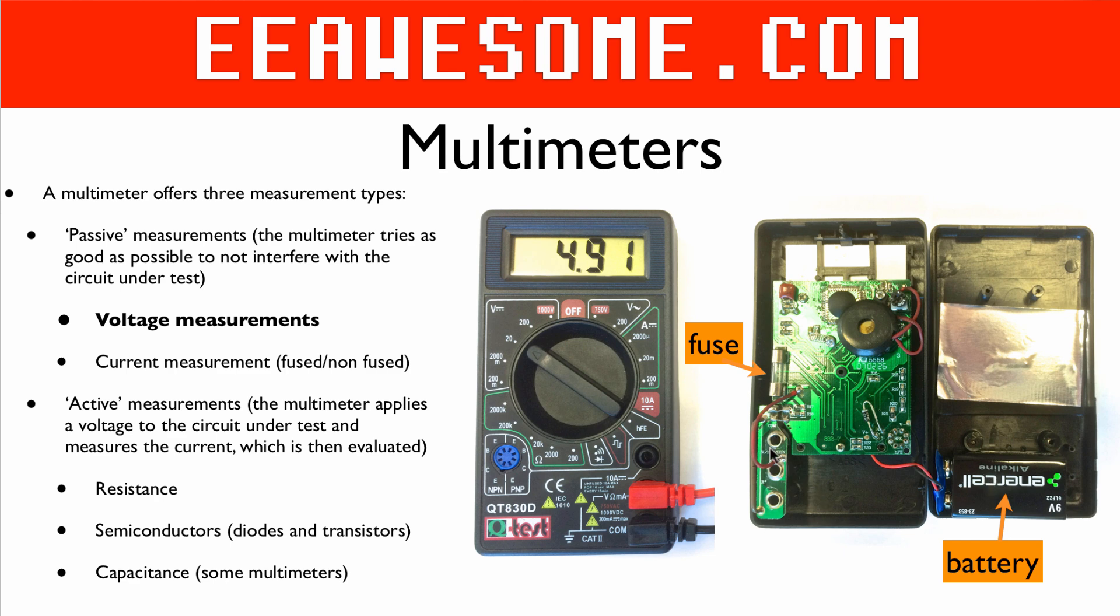These here are the three connectors. We have here the COM connector. This is usually connected to the system ground during voltage measurements and then we have the actual measurement probe which is labeled voltage, resistance or milliamps. So this is typically the red one. I would definitely recommend that you always use the red one for the actual probe to measure the voltage and the black one for the ground connection.